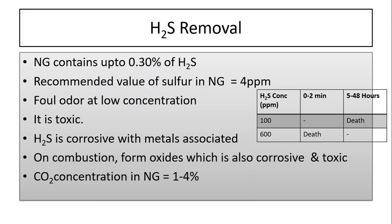H2S removal is critical because it is one of the most toxic components. Natural gas can contain up to 0.3% H2S, but we have to reduce the concentration down to 4 ppm. Interestingly, H2S is sometimes added in very low concentrations as a fall-order odorant. At a concentration of 100 ppm of H2S, a person can be dead within 5 to 8 hours of inhalation.